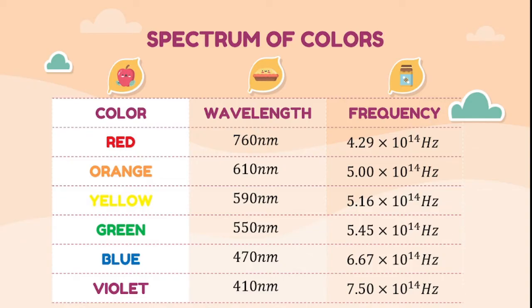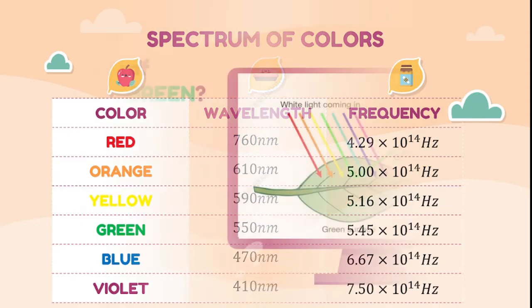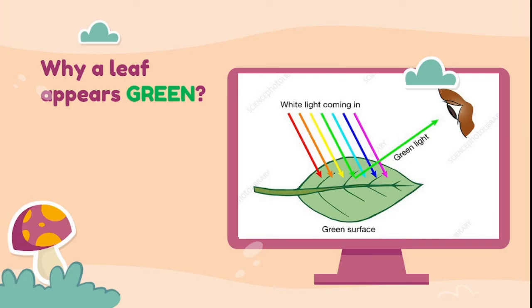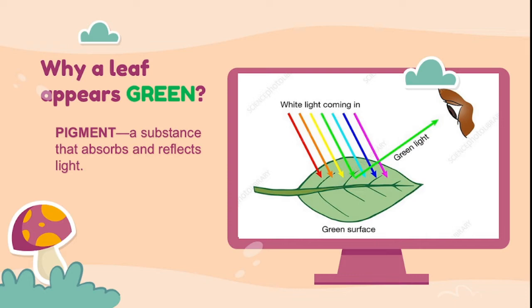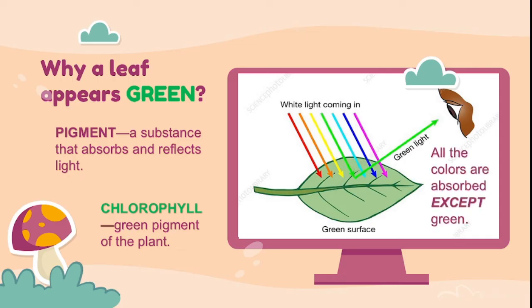Visible light applies in various colors that we enjoy every day. But how are our eyes able to see colors? Why does a leaf appear green? Let us first determine what a pigment is. A pigment is a substance that absorbs and reflects light. Chlorophyll is the green pigment of the plant. A green leaf containing chlorophyll will absorb all the colors of light except green. The green light is reflected back to the eyes — the reason why a leaf appears green. The same process applies to other colors such as red, orange, yellow, blue, and violet.